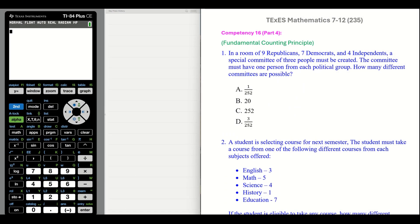Number one: in a room of nine Republicans, seven Democrats and four independents, a special committee of three people must be created. The committee must have one person from each political group. How many different committees are possible?